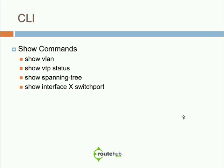Next we are going to talk about some of the show commands. We will show examples of doing a show VLAN, show VTP status, show spanning tree for one of the VLANs, and then show interface with the interface name followed by switchport, which gives us layer 2 LAN switching capabilities and is useful for looking at VLANs. Those are the commands we are going to demonstrate shortly.